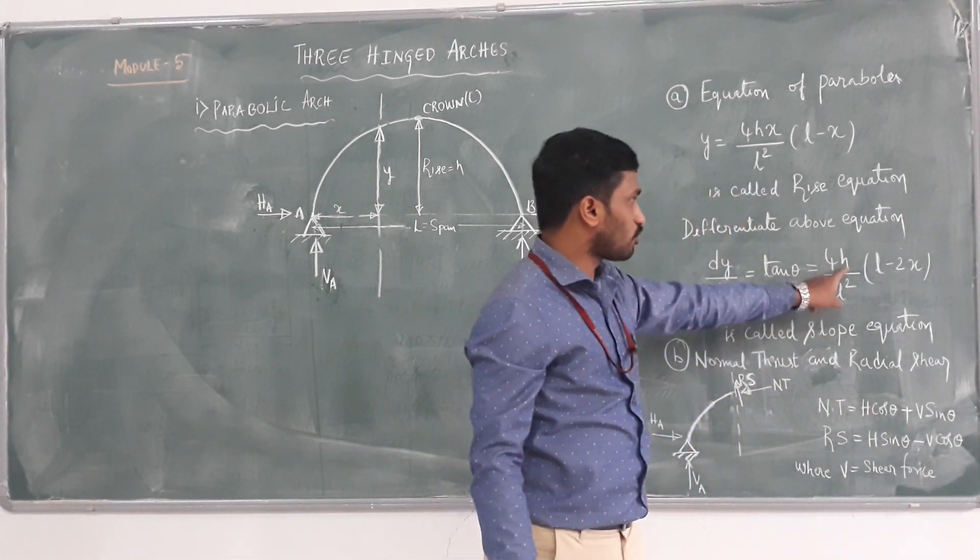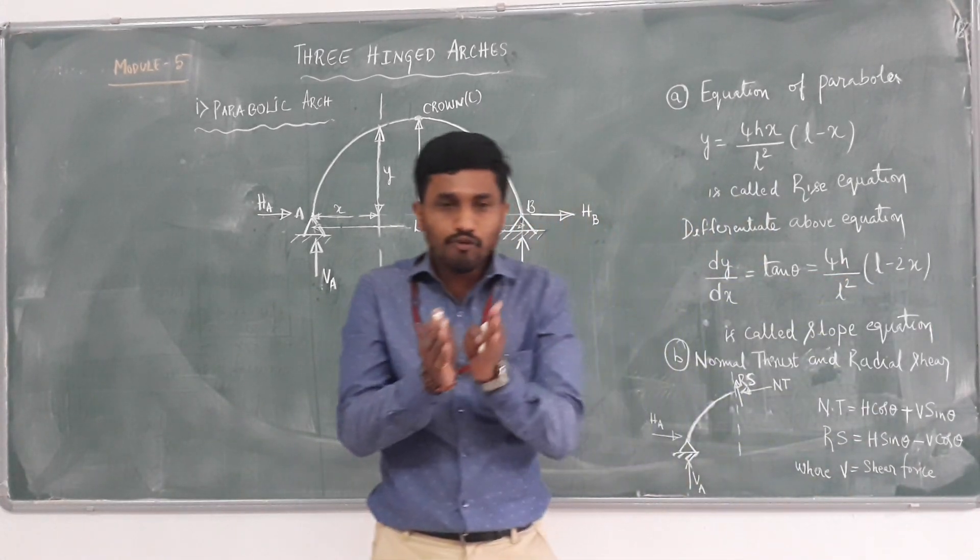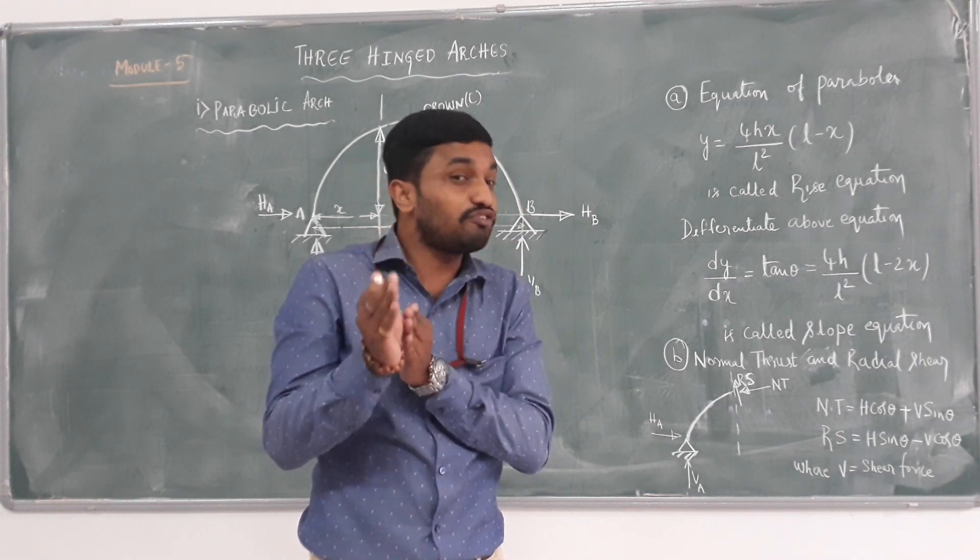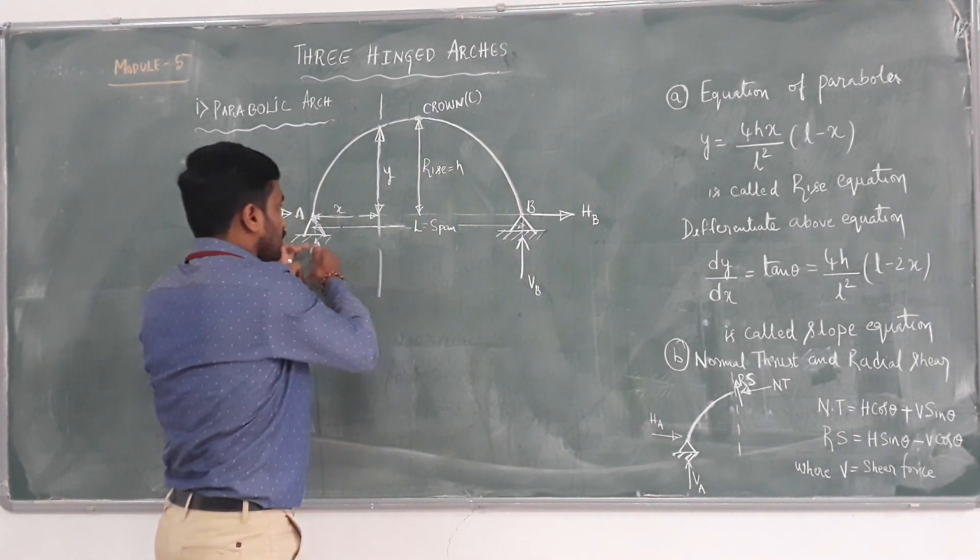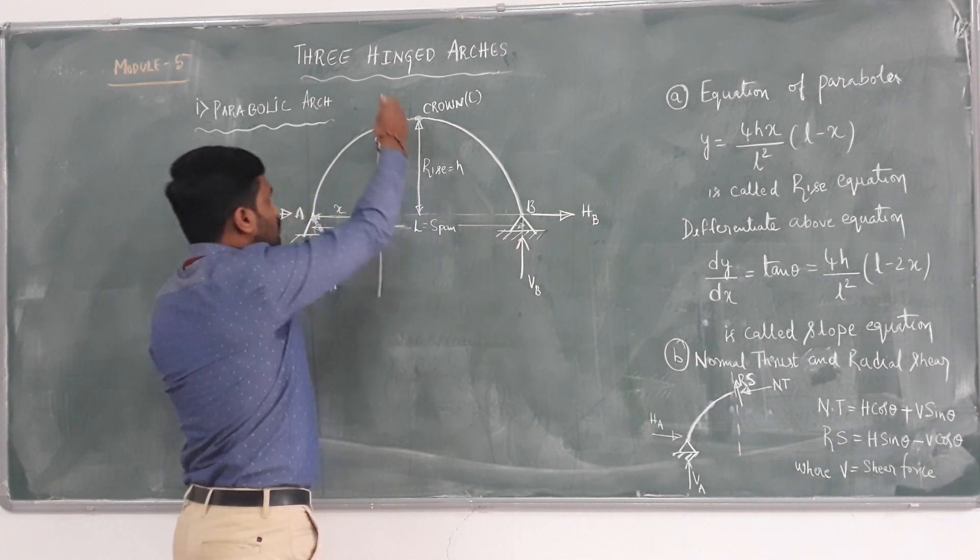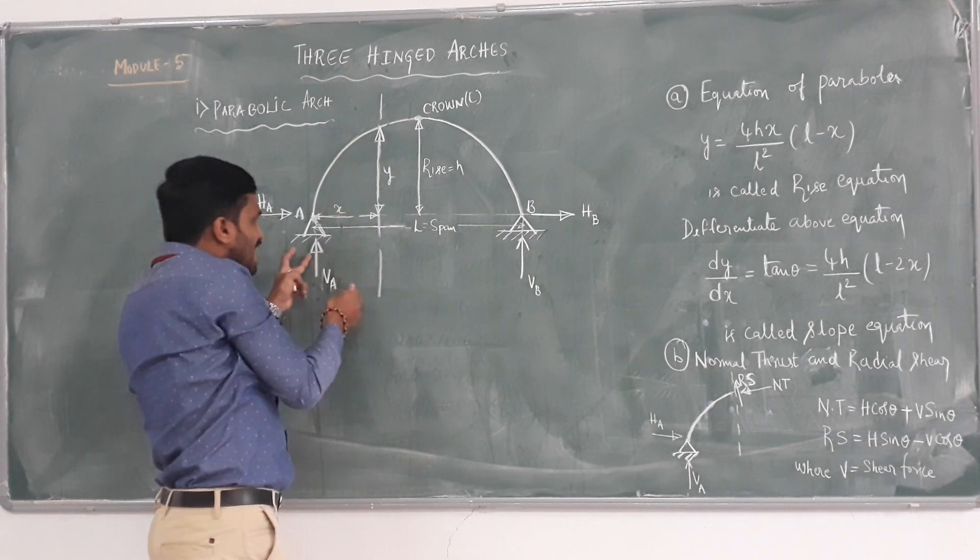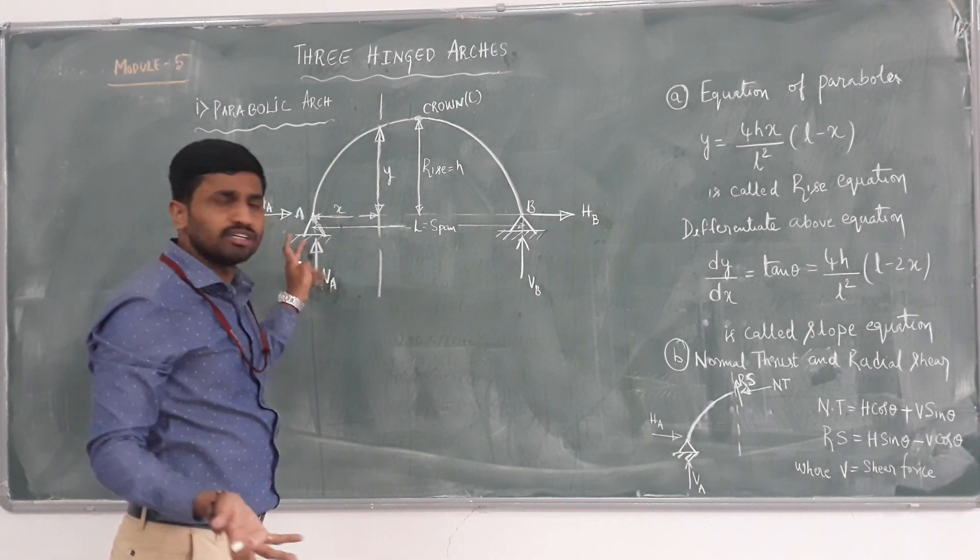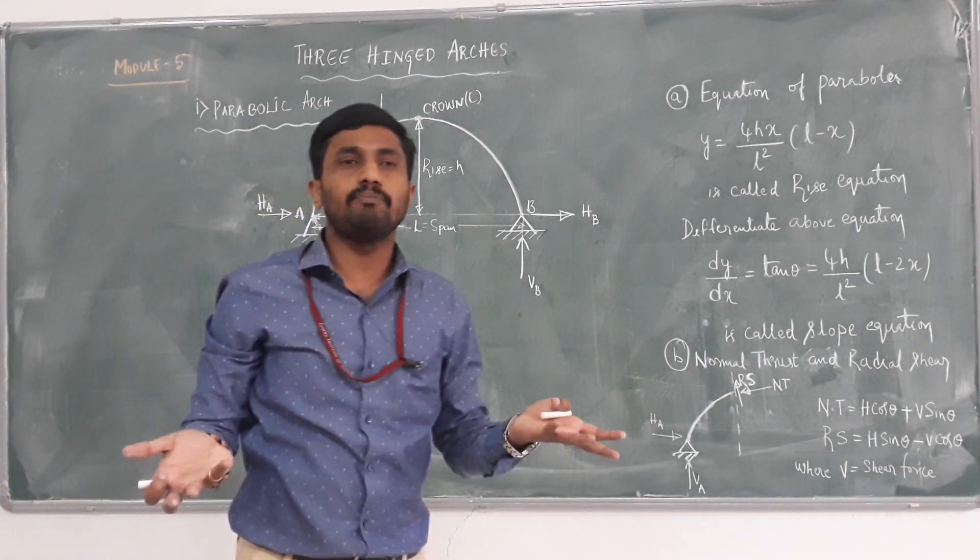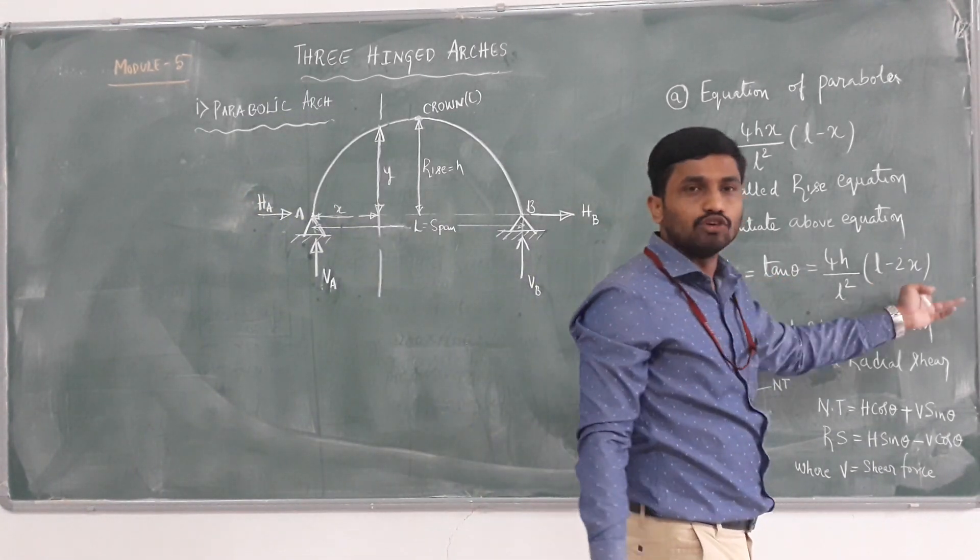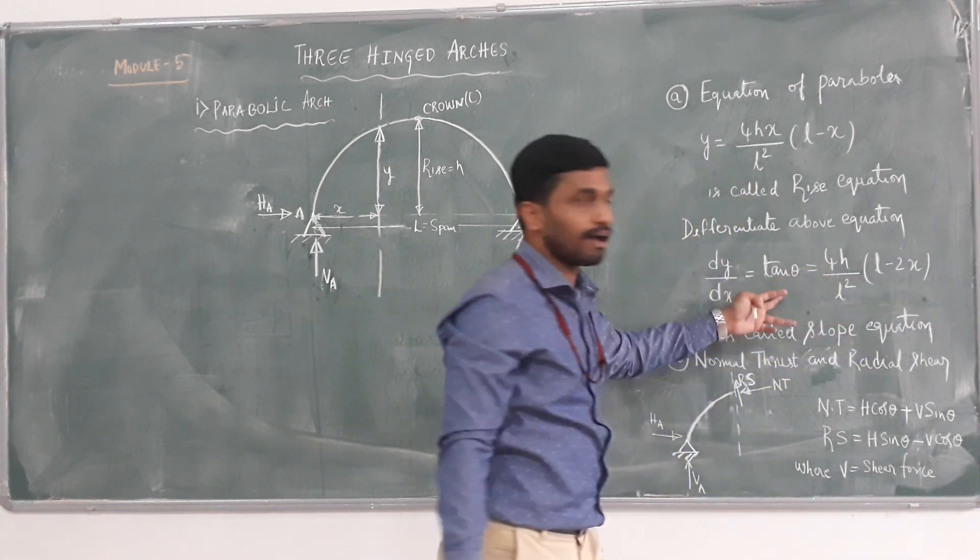Please note that when you are taking H and X, if I want radial shear and normal thrust at a specific point, say for example, the span of the arch is 30 meter, I require normal thrust and radial shear at exactly 12 meter or 10 meter from left support. You have to observe the problem carefully and apply those values, relevant values here. You are getting the theta value.